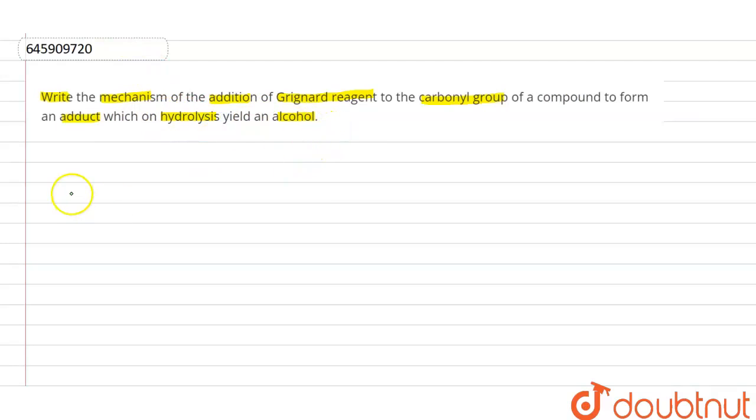We can take any carbonyl group. Let's suppose we are taking this ketone. So this is a ketone, we can take aldehyde as well, and that is reacting with the Grignard reagent.